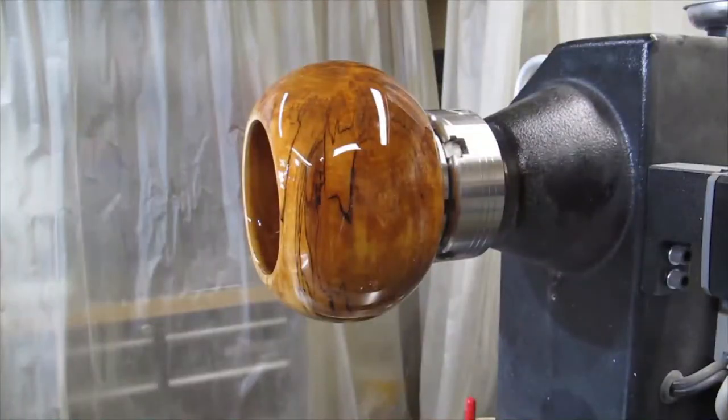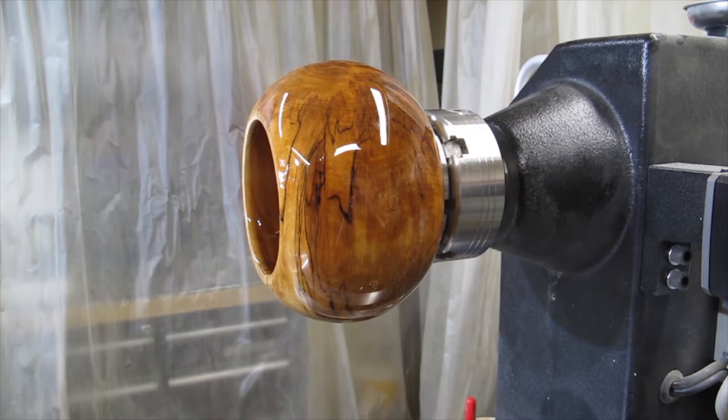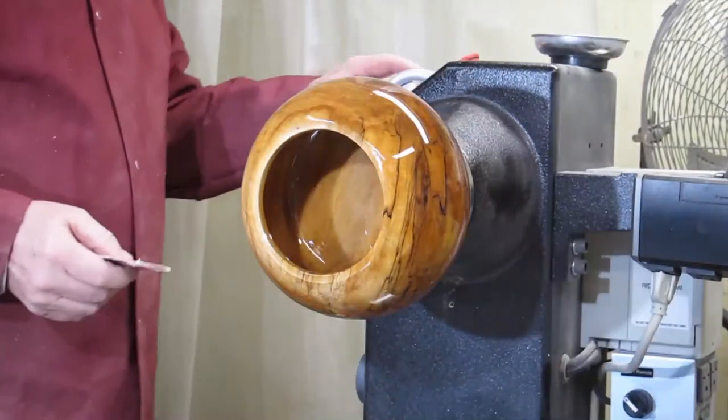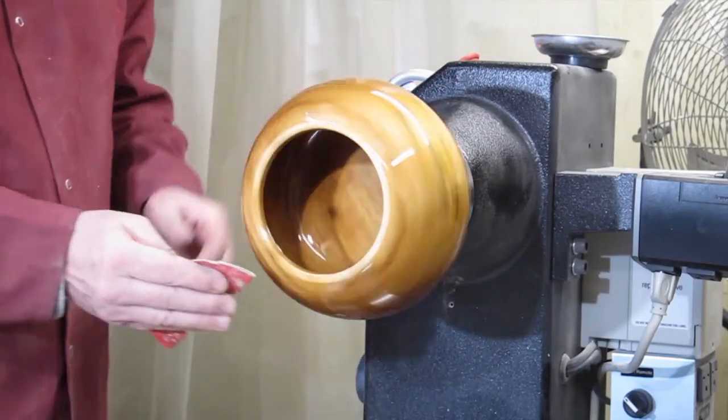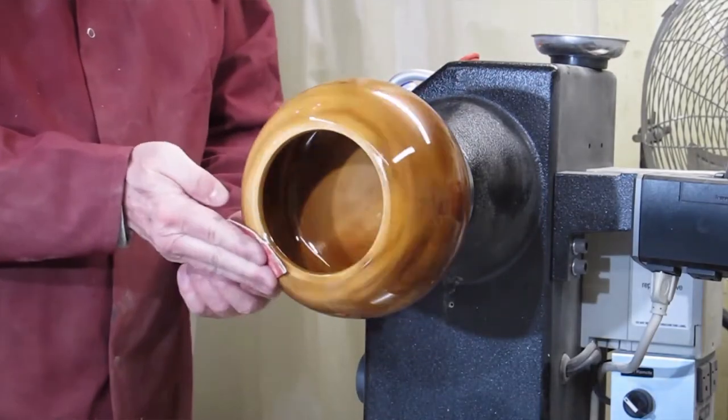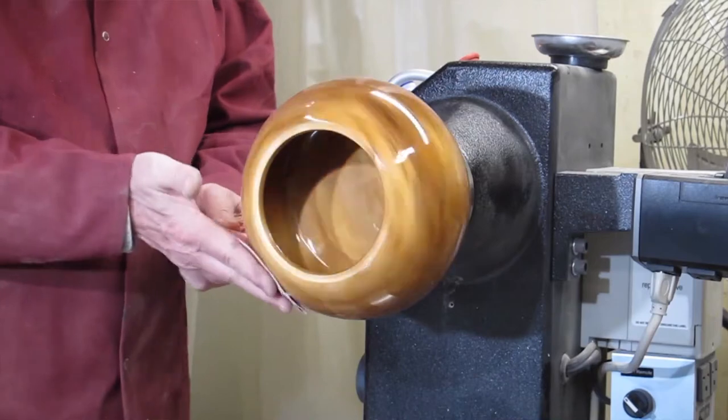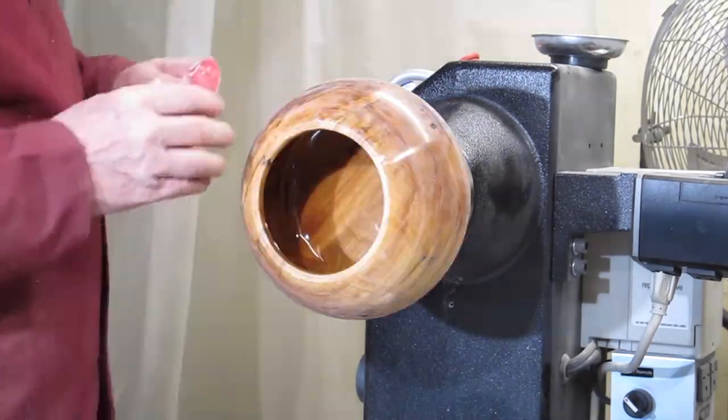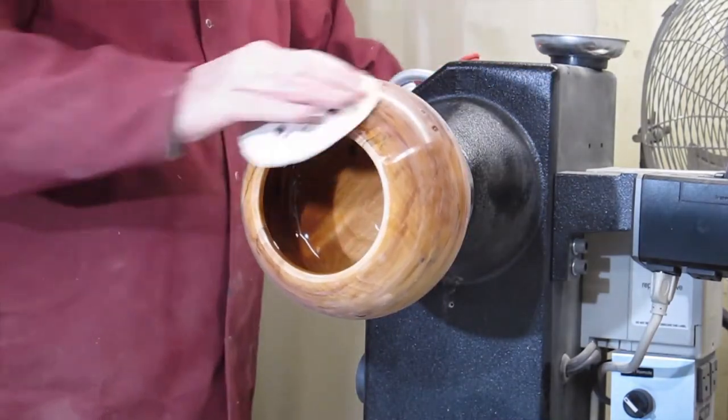This is a spalted birch bowl that's had two coats of resin on it, and now I have to prepare it for its third coat, so I have to give it a light sanding. I'll start off by sanding with 220 grit sandpaper. The purpose of the 220 grit is to give the cured resin that's on the bowl now a bit of bite so that the last coat of resin will have a better bond.